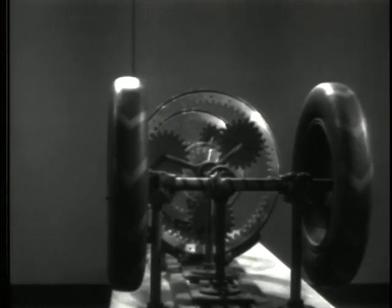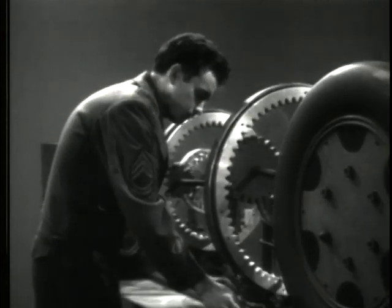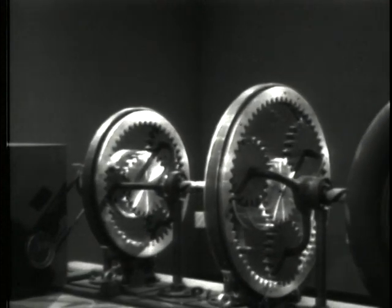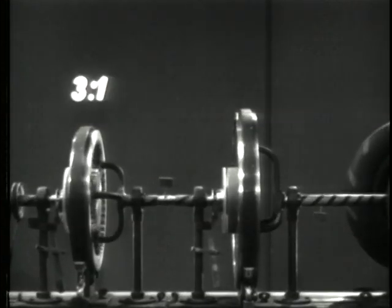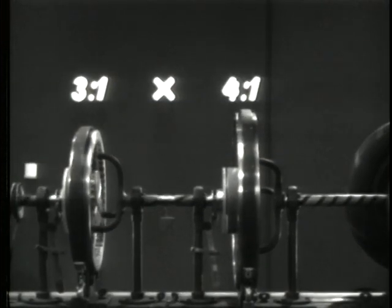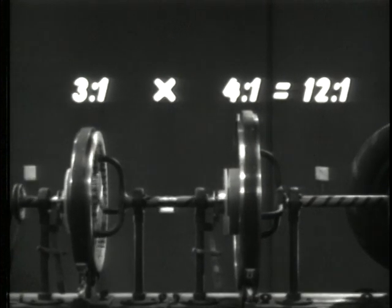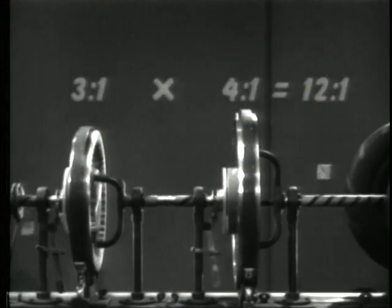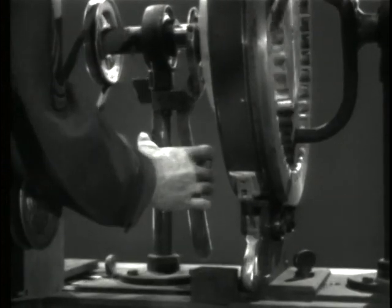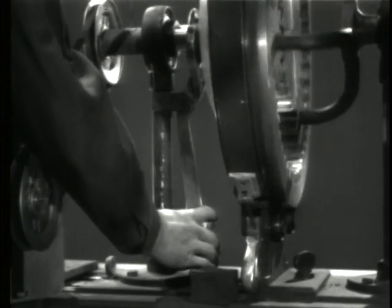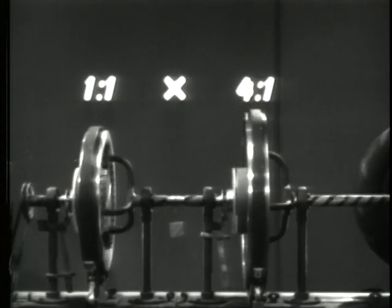To demonstrate how connecting the sets multiplies ratios, let's use just two sets first. We'll put both sets in reduction. One set has a ratio of three to one, and the other a ratio of four to one. Therefore, we get a total reduction of twelve to one — this is the lowest speed. By putting the small gear set in direct drive and keeping the large one in reduction, we get a total reduction of four to one. This is second speed.